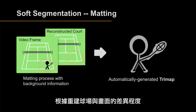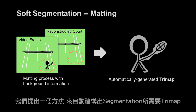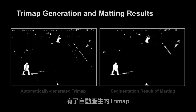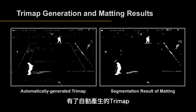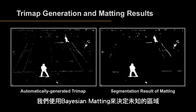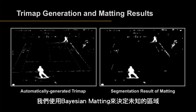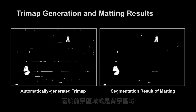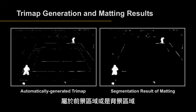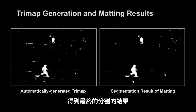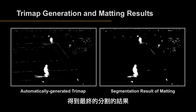Calculating the difference of the current frame and the reconstructed frame, we propose a method to construct a trimap automatically. With the automatically generated trimap, we apply special matting to decide whether the unknown region belongs to the foreground region or background region, and then get the final segmentation result.